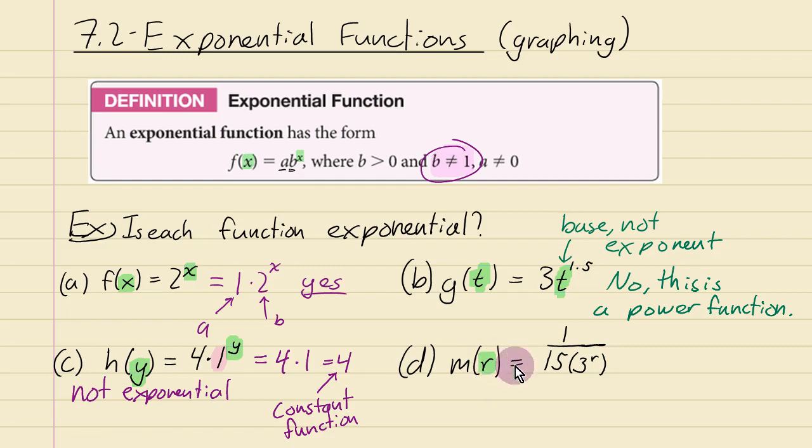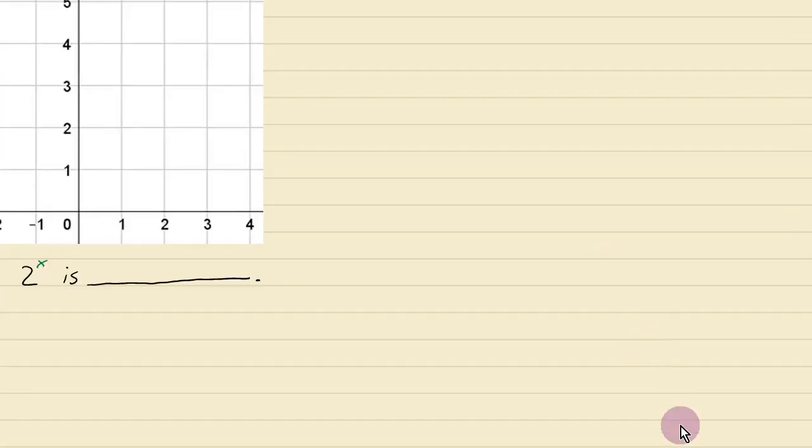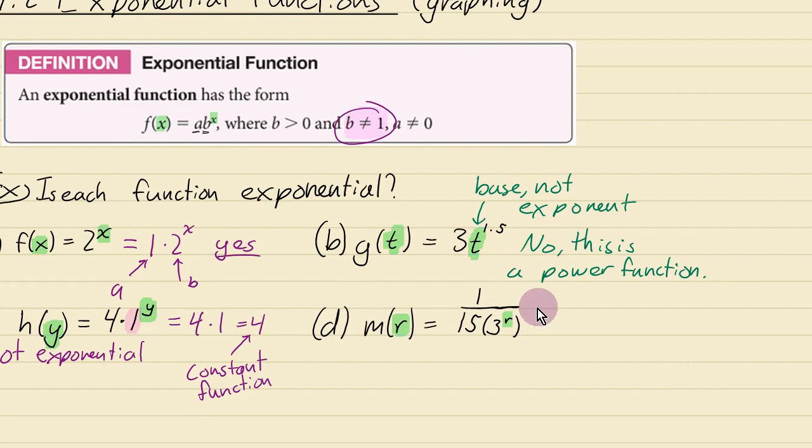And then looking at this one, you can see that the input variable r is in the exponent here. But it's not really clear what the a and b is. So I might look at this and say, how can you find the a and the b by rewriting it in an a times b to the x form? Well, one thing you could do is separate the one over 15 part from the one over three to the r part. So that you can see maybe the a is going to be equal to one over 15.